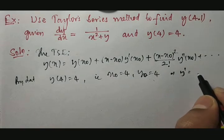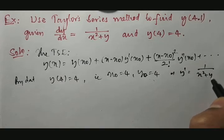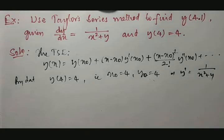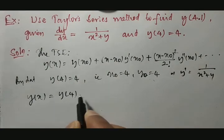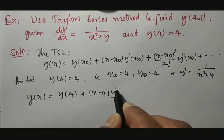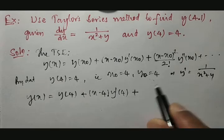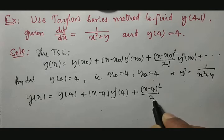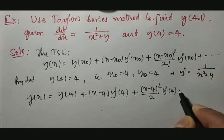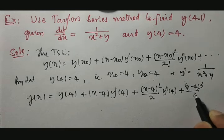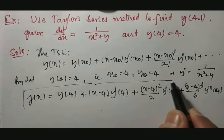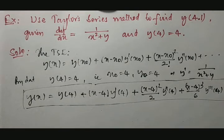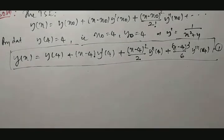And y' is given as 1/(x² + y). Therefore, the Taylor expansion becomes: y(x) = y(4) + (x − 4)·y'(4) + (x − 4)²/2 · y''(4) + (x − 4)³/6 · y'''(4). This will be taken as equation number 1 and will serve as our Taylor series expansion for obtaining the numerical solution.